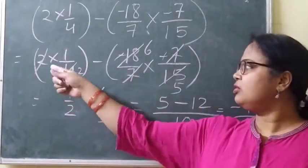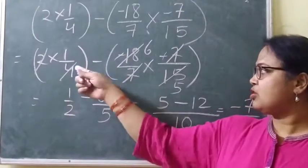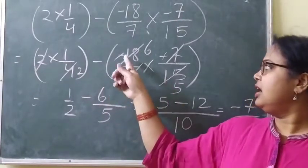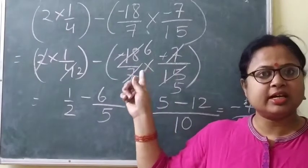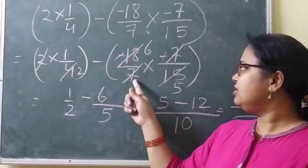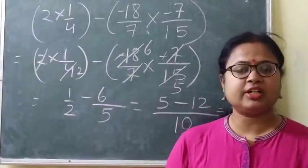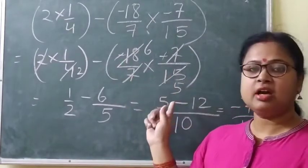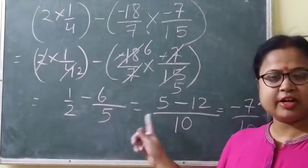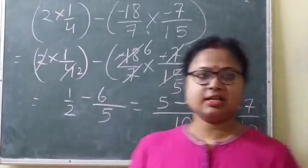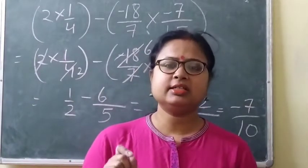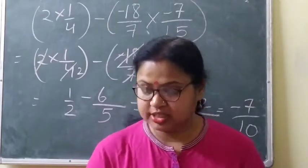So the process is clear. Here we can cancel: two 2s are 4, because we have to do bracket work first and we can do the two small brackets simultaneously. Then the minus sign and minus sign give plus, because in between a multiplication sign is given. Then 7 and 7 cancel; 18 and 15 cancel by 3 — three 6s are 18, three 5s are 15. So we have 1 by 2 minus 6 by 5. We find the LCM, solve it, and at last we get minus 7 by 10.